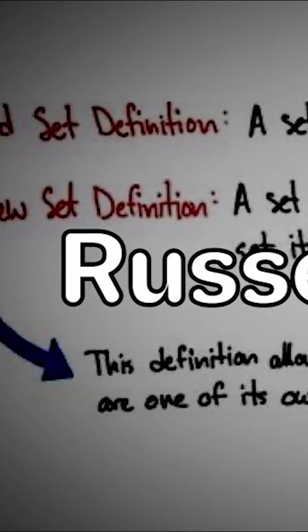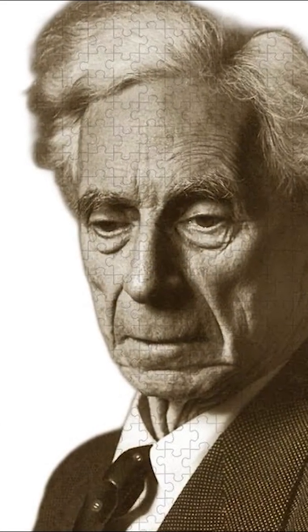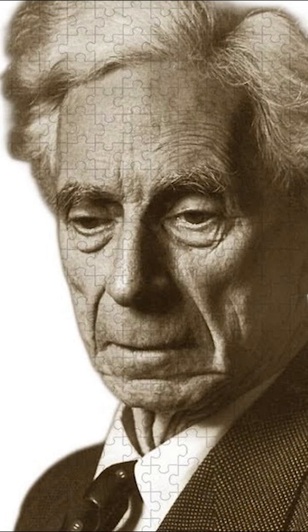Here's how it works. In naive set theory, set theory before formal restrictions were applied, it's perfectly reasonable to imagine a set of things that don't contain themselves. For instance, the set of all cats doesn't contain itself, because it's not a cat.